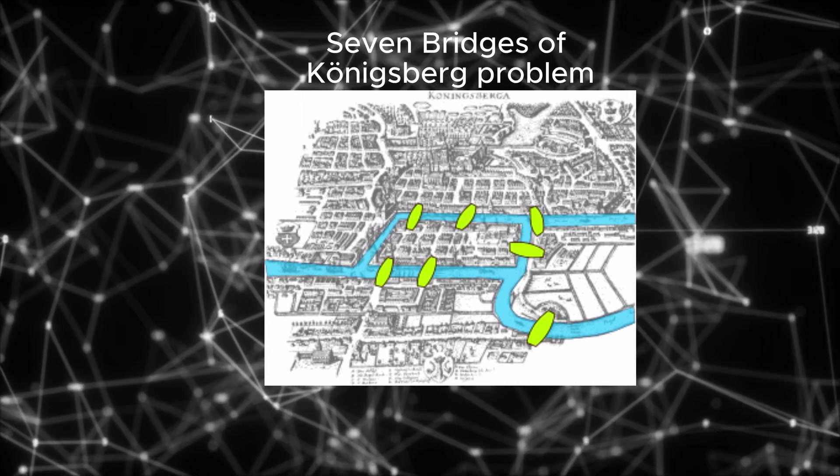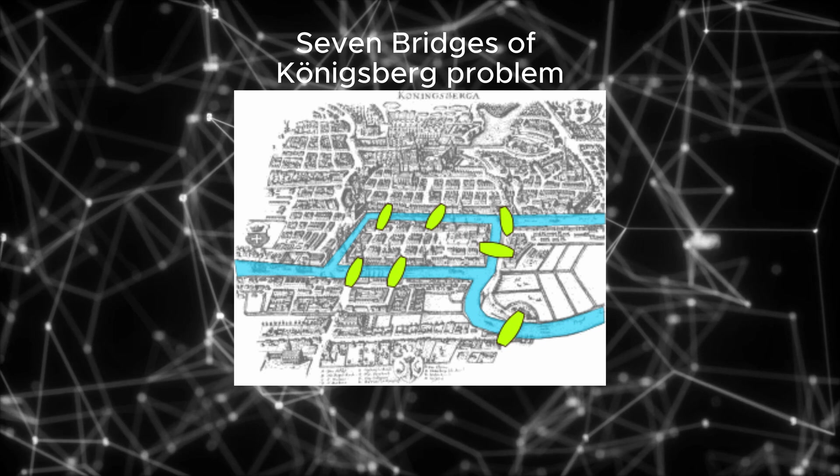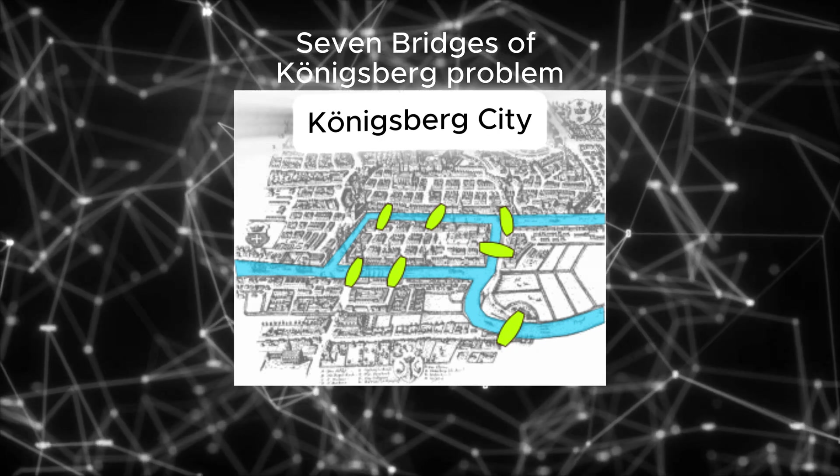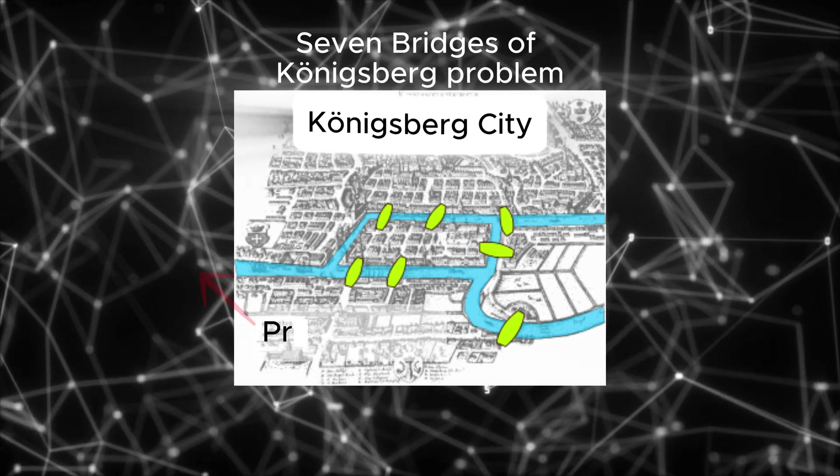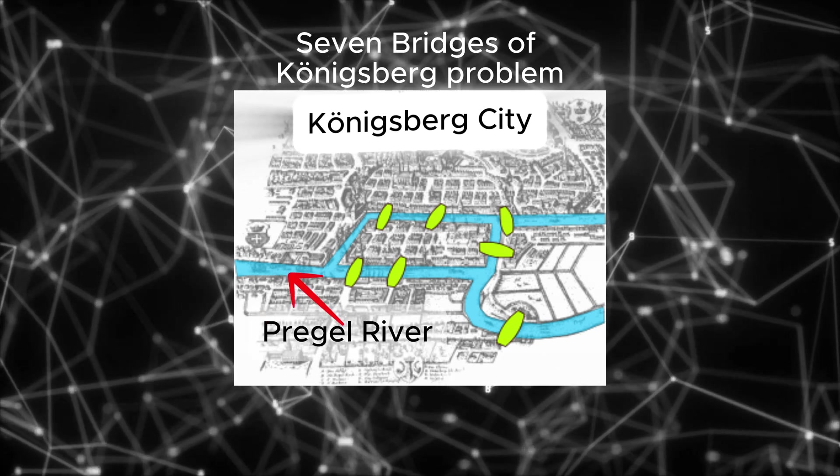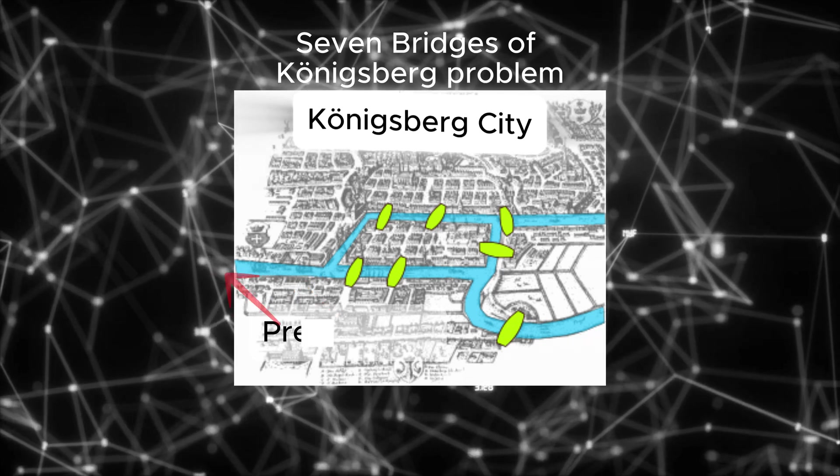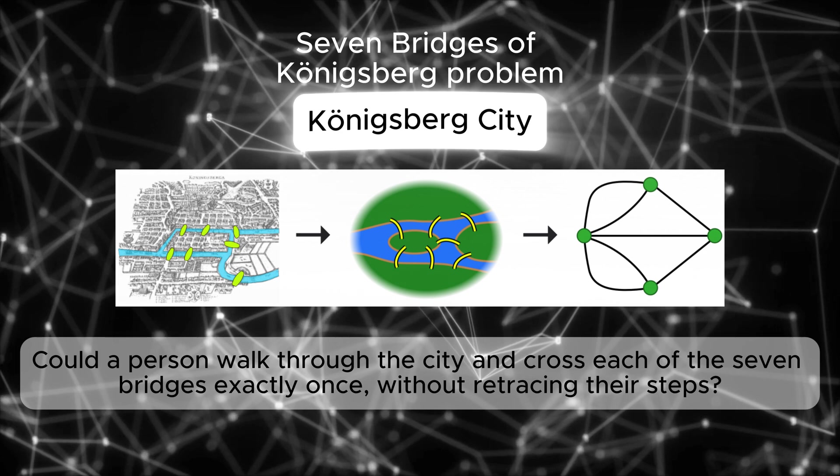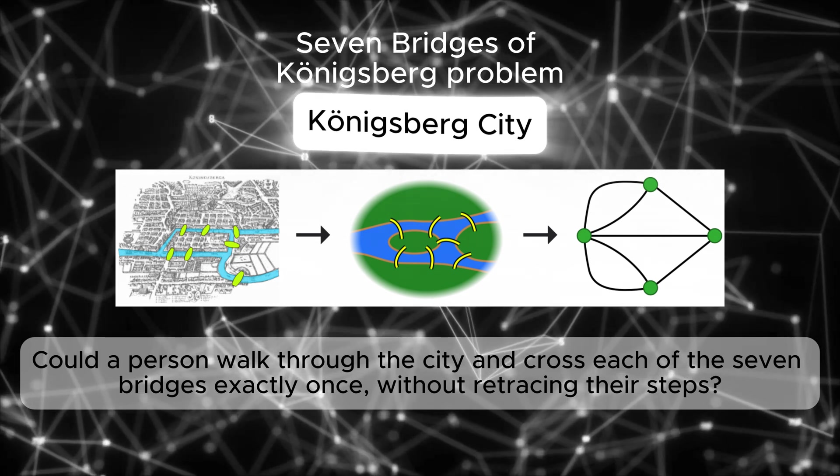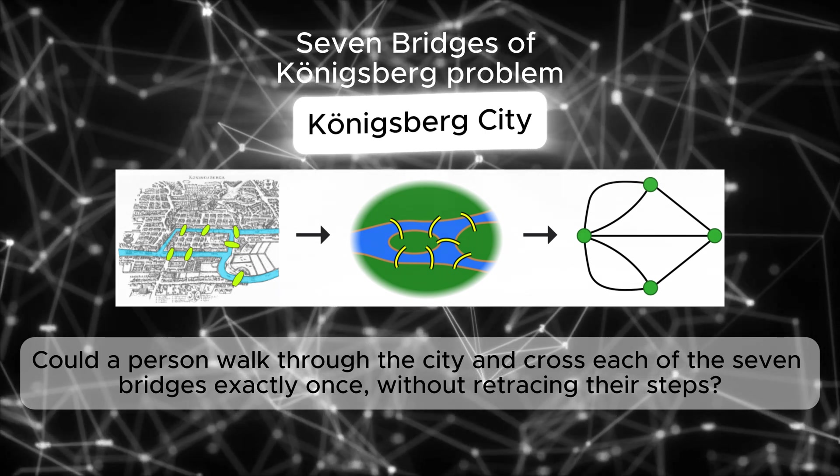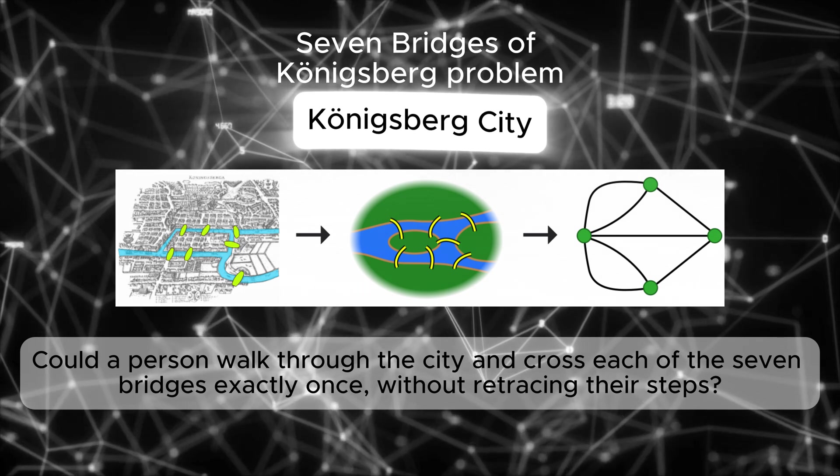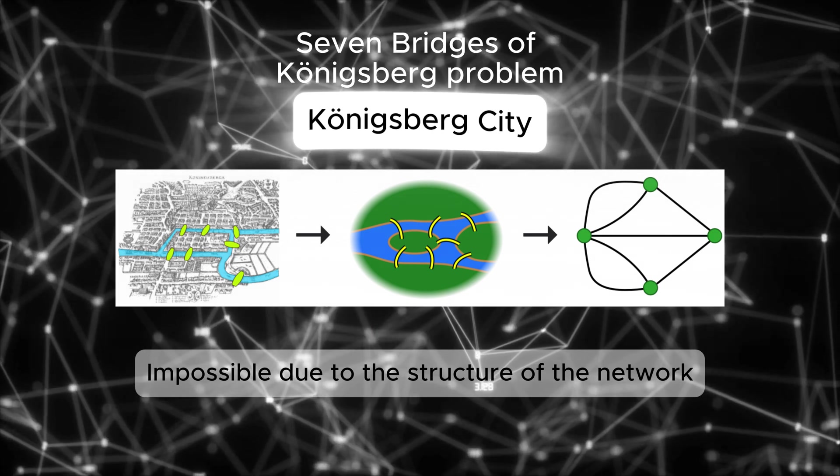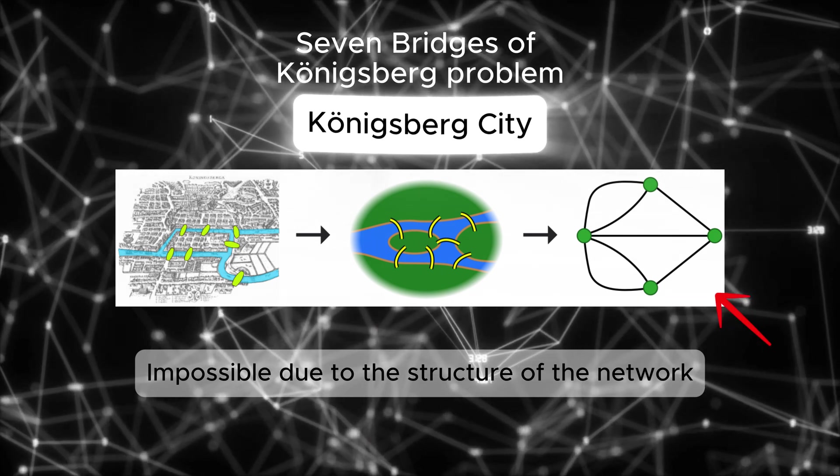The Seven Bridges of Königsberg problem is a classic puzzle in mathematics that originated in the city of Königsberg in the 18th century. The city was situated on both sides of the Pregel River and included two large islands connected to each other and the mainland by seven bridges. The challenge was, could a person walk through the city and cross each of the seven bridges exactly once without retracing their steps? Leonhard Euler proved that it was impossible to find such a path.